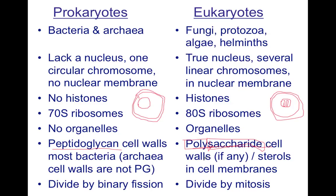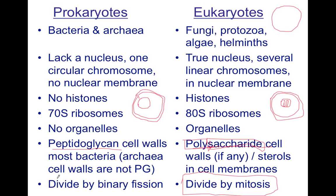One really important thing you should know is that eukaryotes divide by mitosis. You might have heard this before from high school — mitosis is how we humans divide. Before we started growing up, even as a fetus in the womb, we started dividing by mitosis. It involves phases like S phase, anaphase, telophase, and others — we won't go deep into that now, but just know that eukaryotes divide by mitosis, and prokaryotes divide by binary fission.